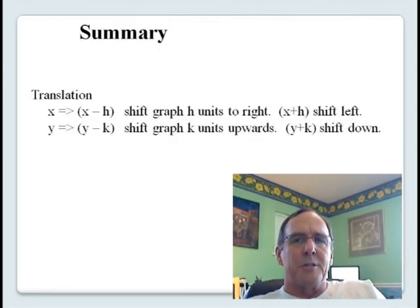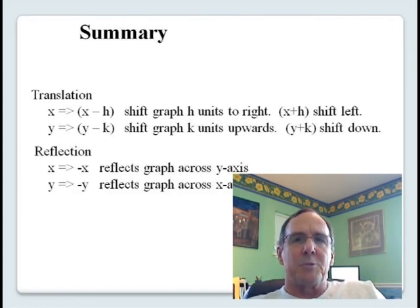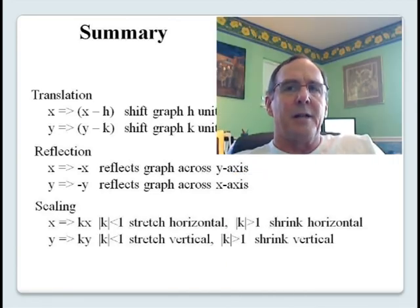In summary, we described three transforms. For a horizontal translation, replace x by x minus h. For a vertical translation, replace y by y minus k. For a reflection across the y-axis, replace x by minus x. For a reflection across the x-axis, replace y by minus y. And replacing x by k times x, or y by k times y, will stretch or shrink your graph horizontally or vertically. I hope you found this video helpful. Please feel free to leave comments or suggestions. You can watch more math videos at www.mathforeveryone.info. Thanks for watching.